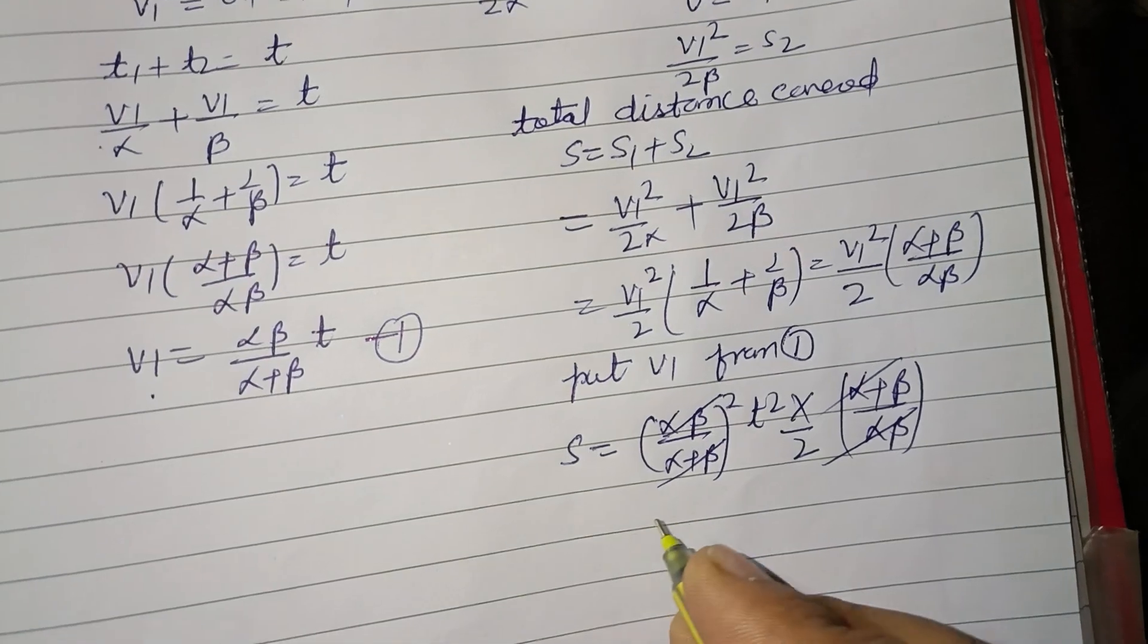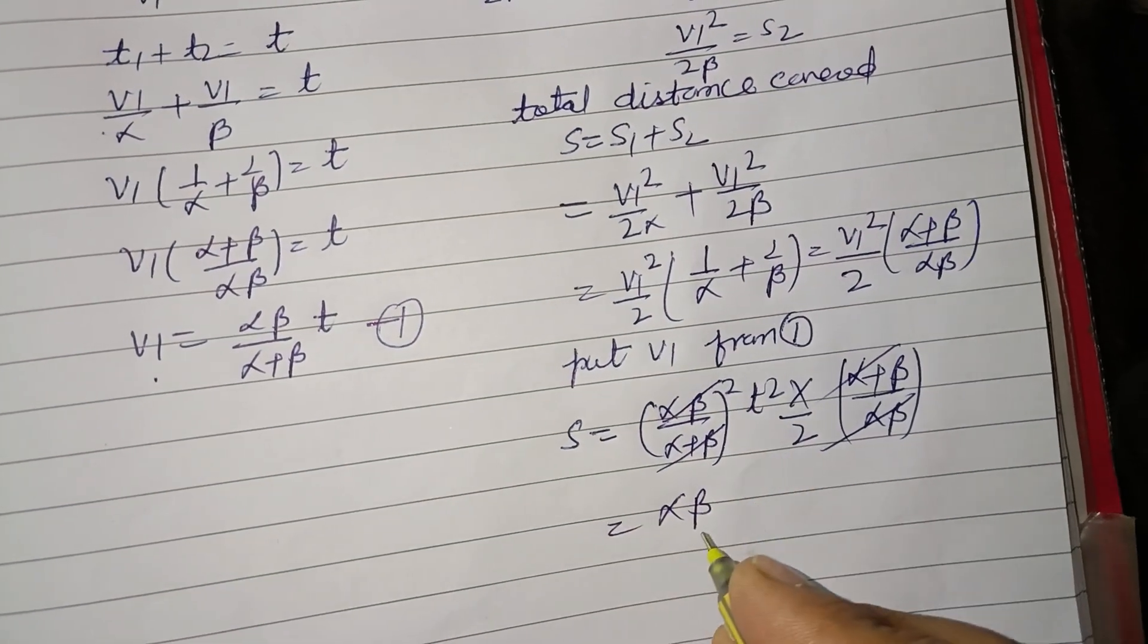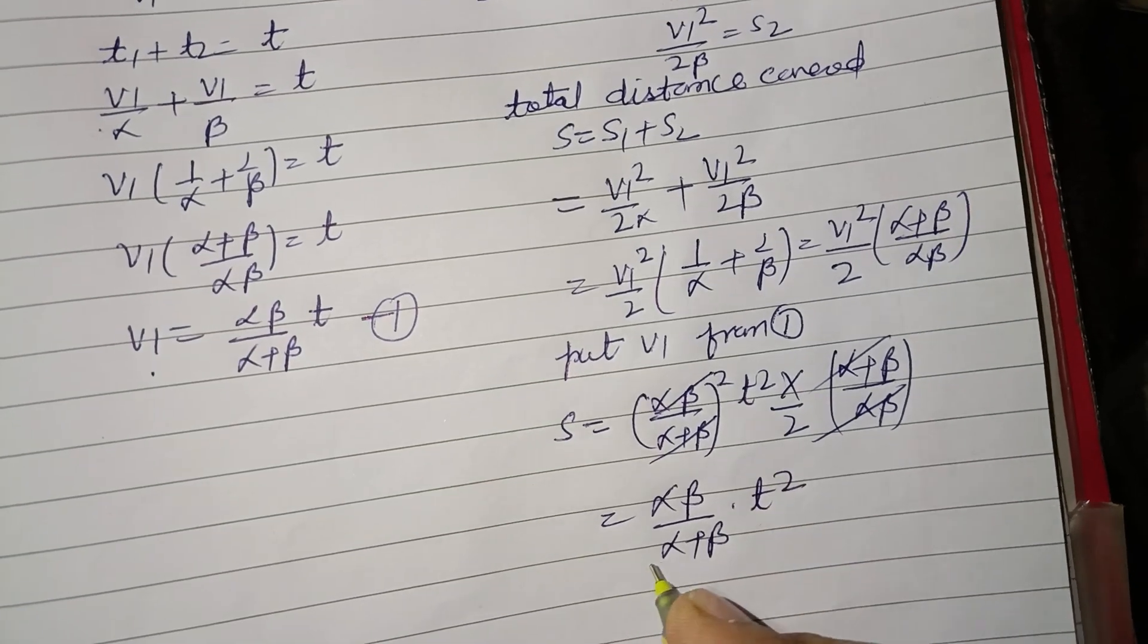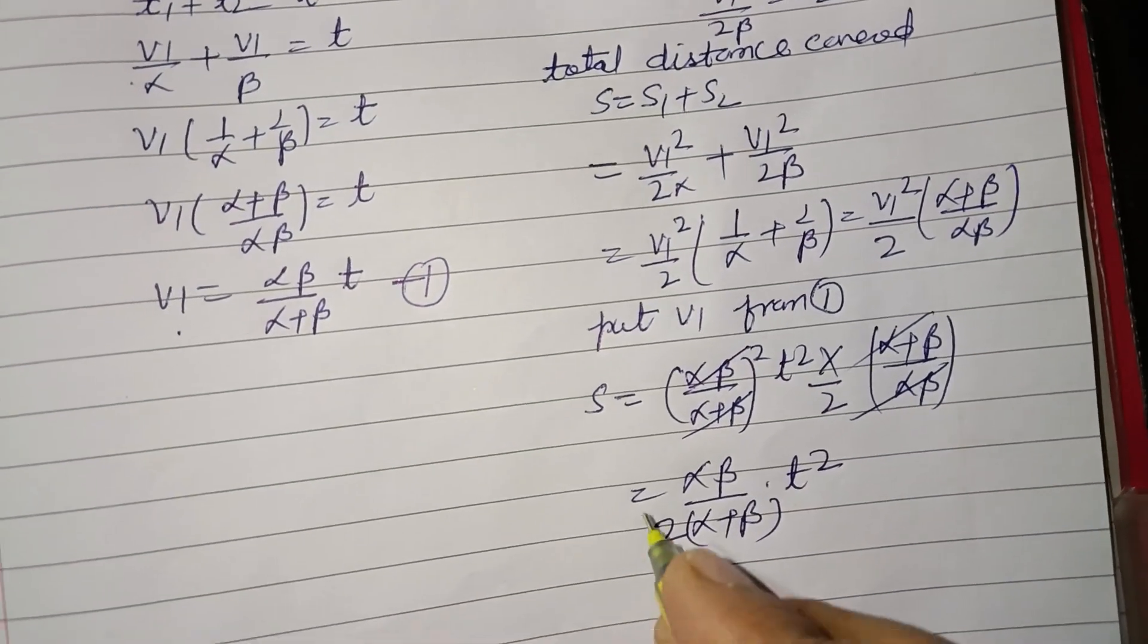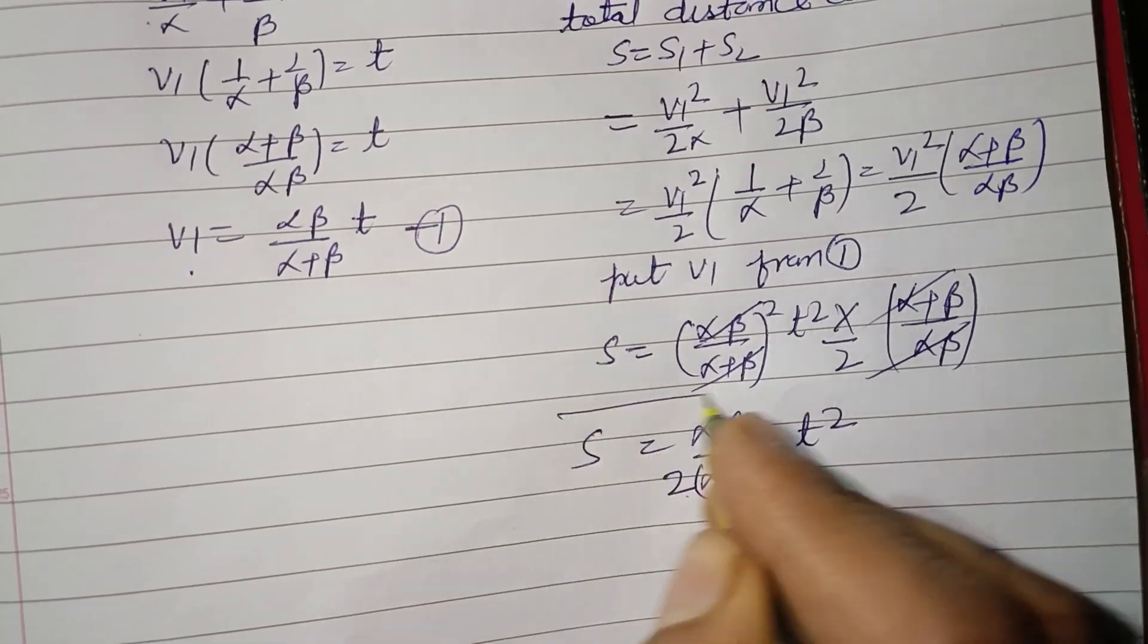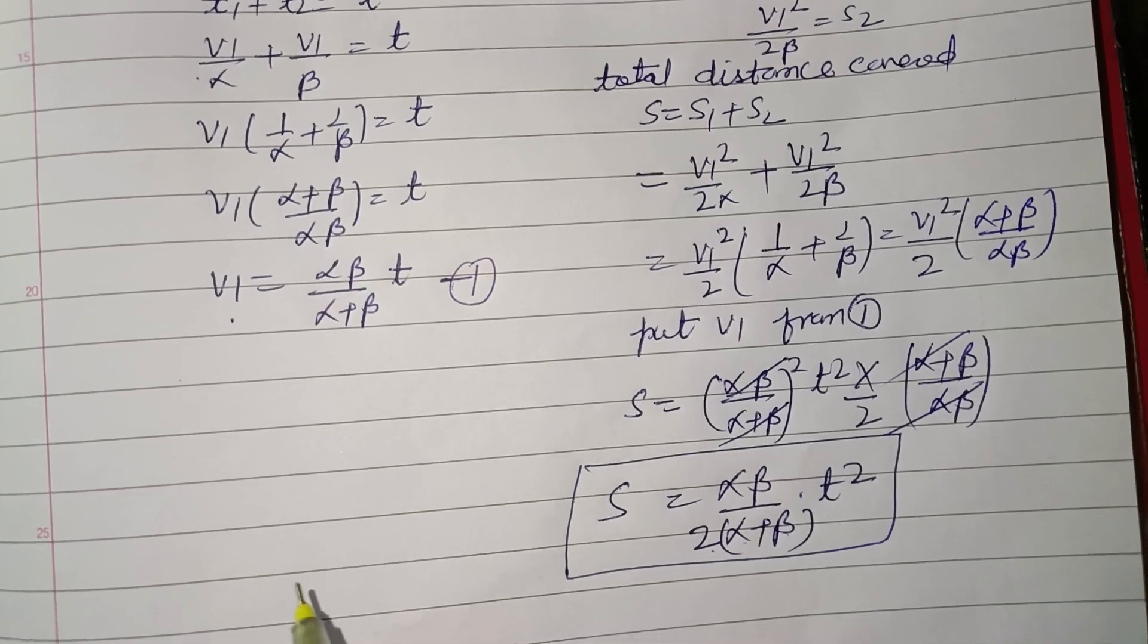This is divided once; it becomes αβ/(α + β) times t²/2. So s = αβt²/[2(α + β)] is the total distance covered.